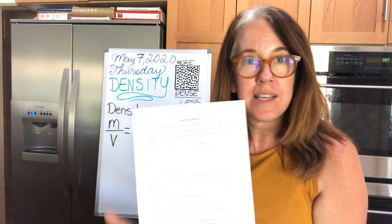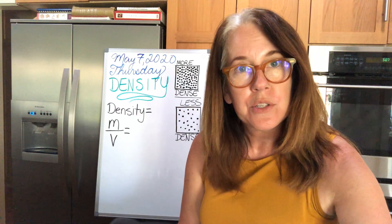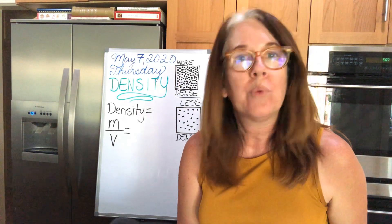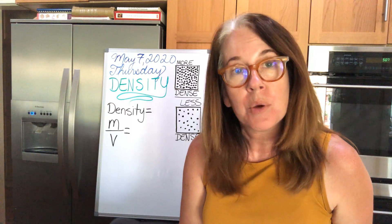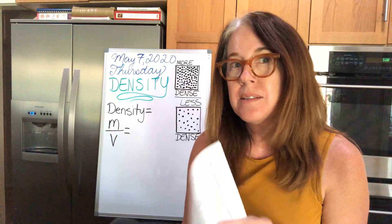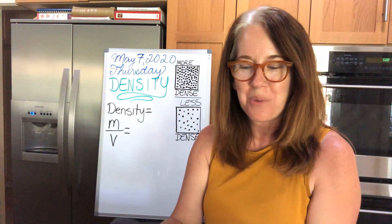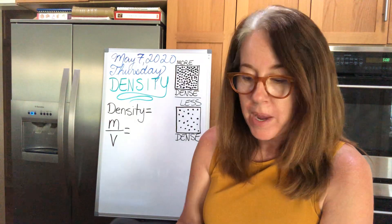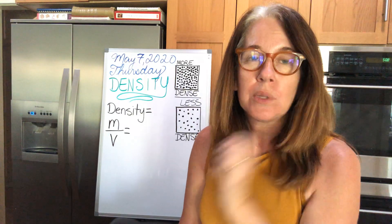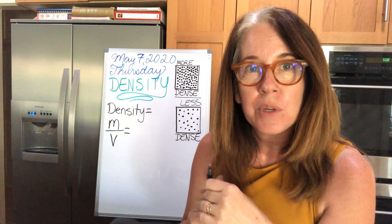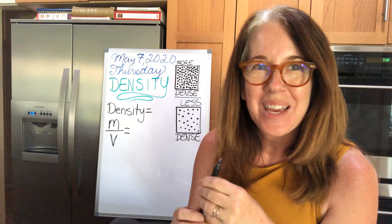Now that you've filled this in and have all your answers and predictions, we're going to help ourselves make a more educated guess — we're going to create a hypothesis of which liquids are the most dense and which are the least dense, based on some math. You're also going to need a calculator. If you don't have one handy, quickly grab one and pause if you need to. What we're going to be doing is working with a mathematical formula that you'll use a lot more in middle school and high school.